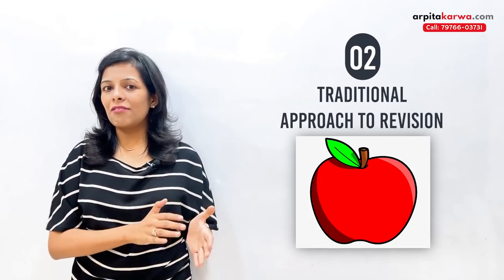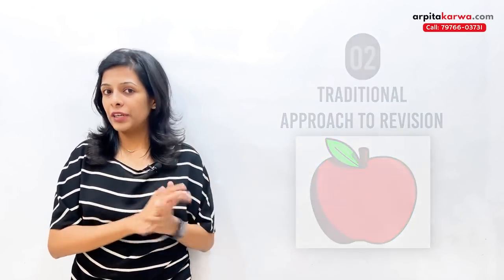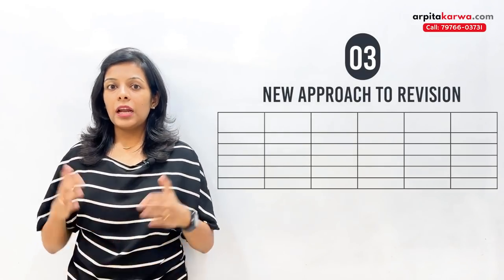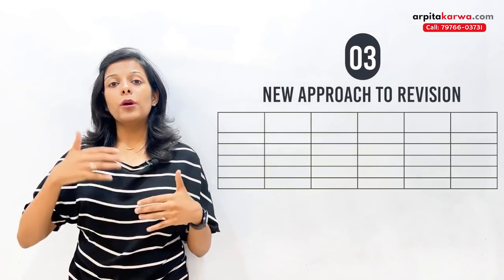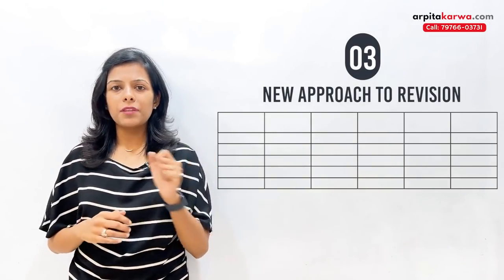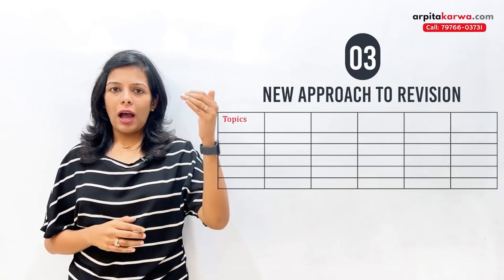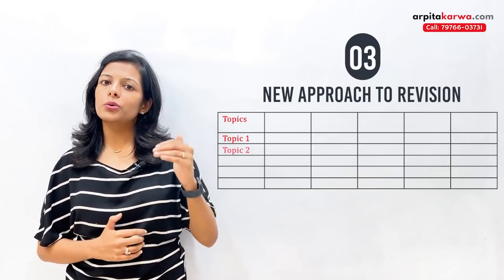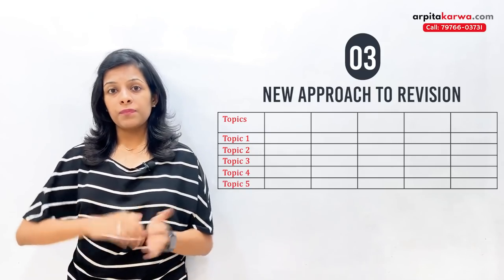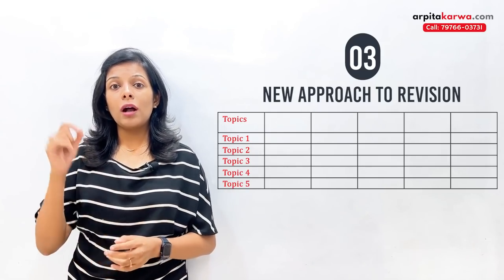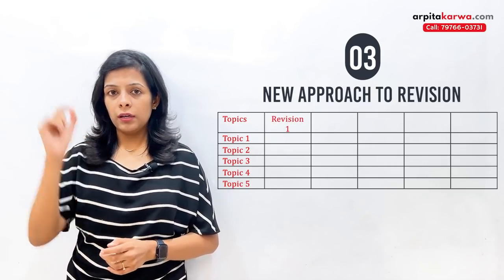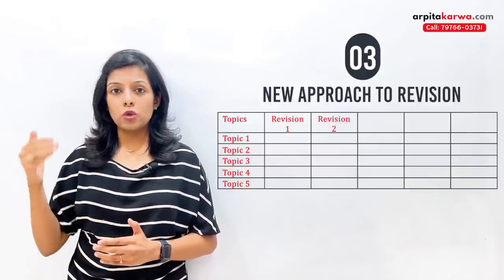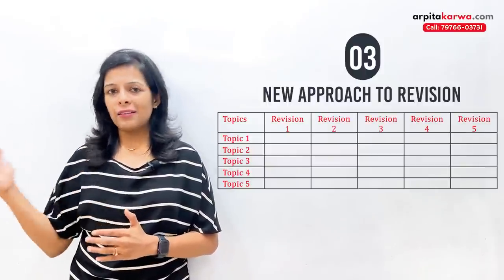That is how this revision timetable fails every time. Now let's talk about the new scientific timetable. This timetable has multiple columns. The first column is for topics — you list all your topics one by one: topic 1, 2, 3, 4, and so on. After that, the next columns are for revisions: Revision 1, Revision 2, Revision 3, Revision 4, Revision 5, and so on.